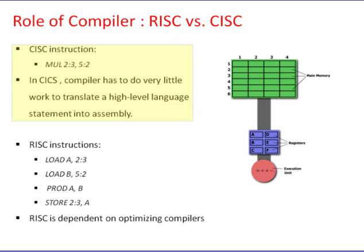RISC approach. RISC only uses simple instructions that can be executed within one clock cycle. The MUL command described above would be divided into three separate commands: LOAD, which moves data from the memory bank to a register; PROD, which finds the product of two operands located within the registers; and STORE, which moves data from a register to the memory banks.